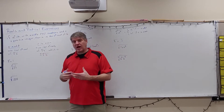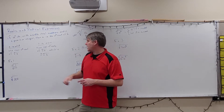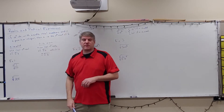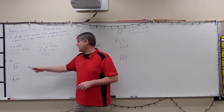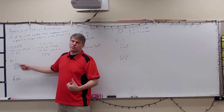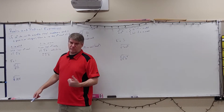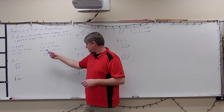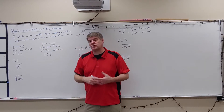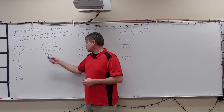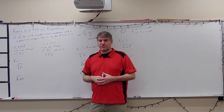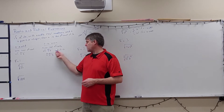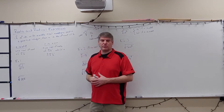If n is odd — like the cube root, the fifth root, the seventh root — I'm only going to have one real nth root. If n is even — so the square root, fourth root, sixth root — then I have two nth roots, which is plus or minus the nth root of b.